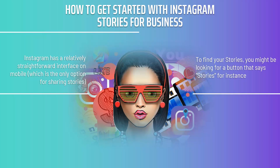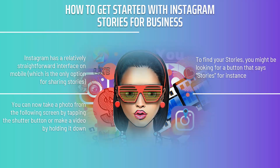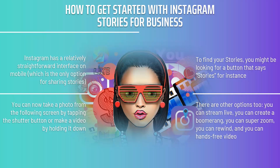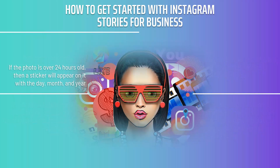To find your stories you might be looking for a button that says 'Stories,' but instead you'll get there by swiping right from the home screen or by tapping the camera icon in the top left. You can take a photo by tapping the shutter button or make a video by holding it down — videos can be up to 10 seconds in duration. There are other options too: you can stream live, create a Boomerang, super zoom, rewind, or record hands-free video. You can also pick an image from your camera roll to use a previously created video or picture.